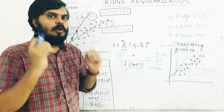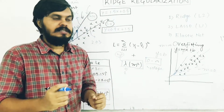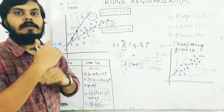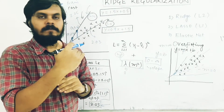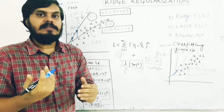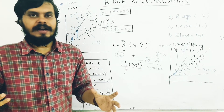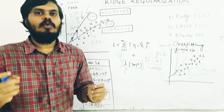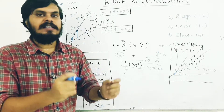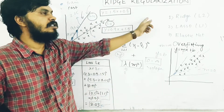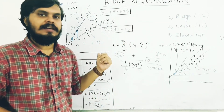The whole idea is that although the bias of the second line is slightly higher — because the line doesn't perfectly fit the training data — the variance is significantly lower. And that is the whole idea behind the bias-variance trade-off. Regularization is exactly this.